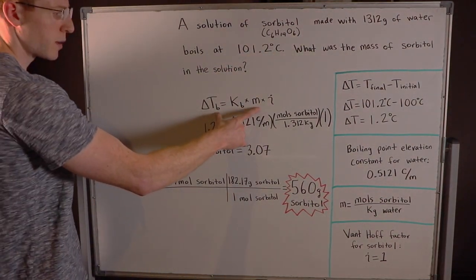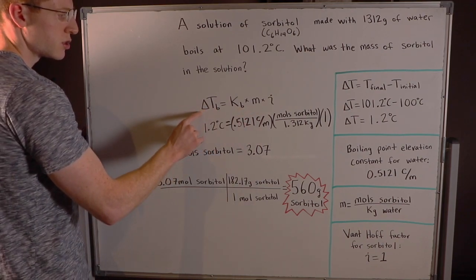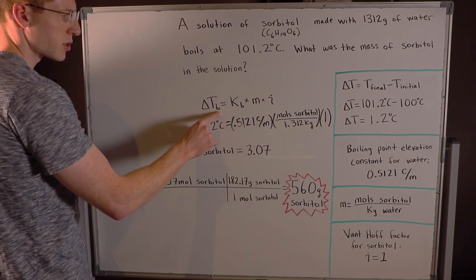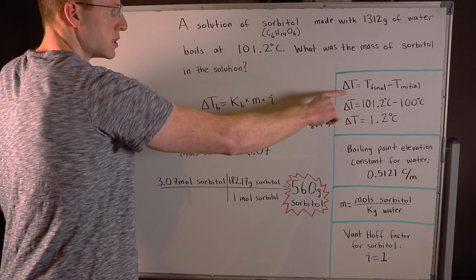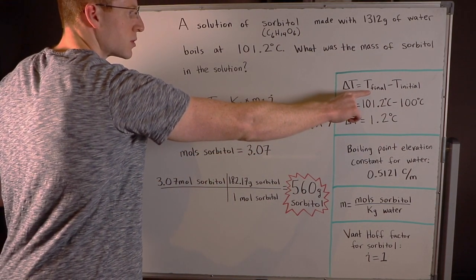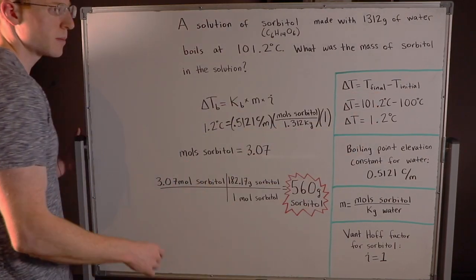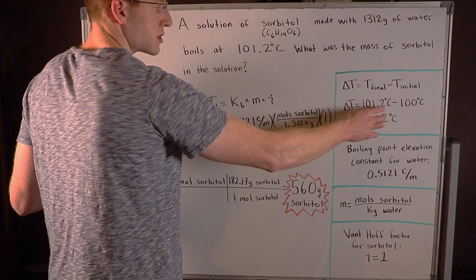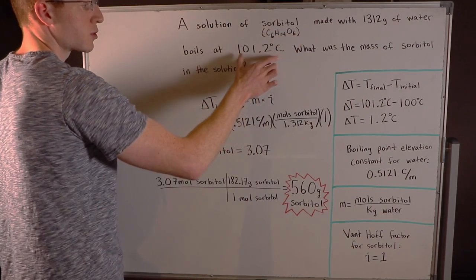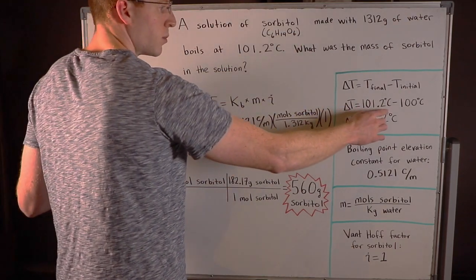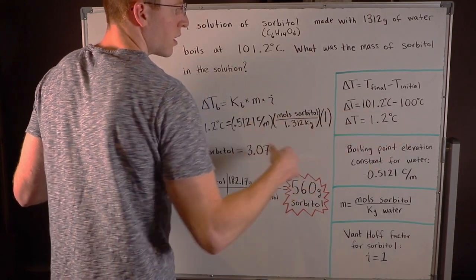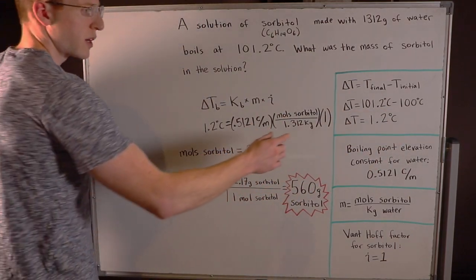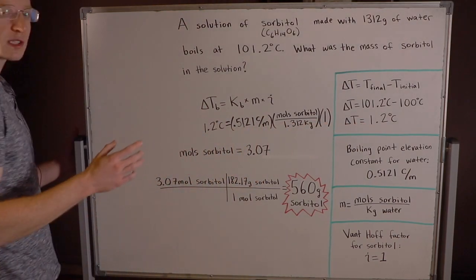So here's our boiling point elevation equation here. I've got change in the boiling point temperature, and I had to calculate that over here in this green box. So delta T is equal to T final, the final temperature, minus the initial temperature. You can think about the final temperature as the temperature after we dissolved in the sorbitol, so now it's 101.2°C boiling point, minus what it initially would be without the sorbitol, 100°C, and you find delta T is 1.2°C.